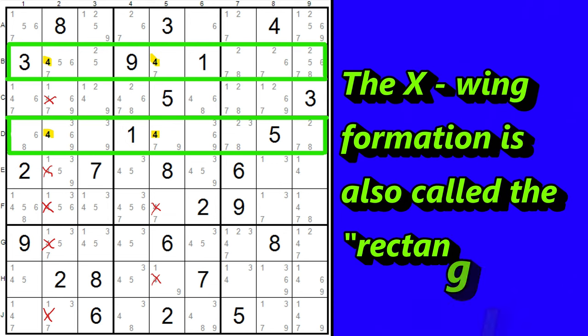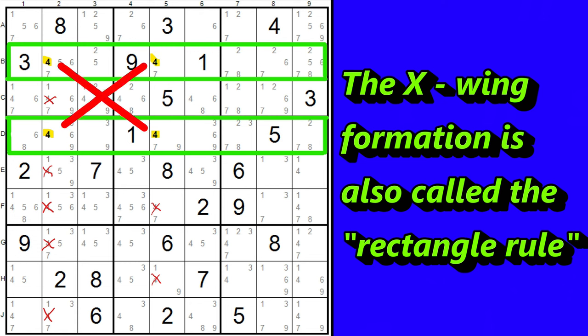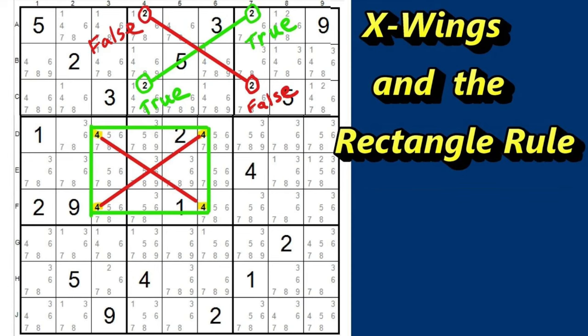This X-Wing formation is also called the rectangle rule, where the X-Wing is part of a 2x2 rectangle, two rows, two columns. For a much more in-depth explanation of this, please see my lesson on X-Wings.